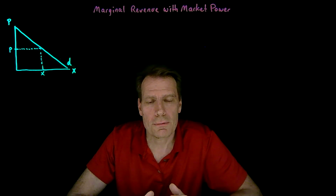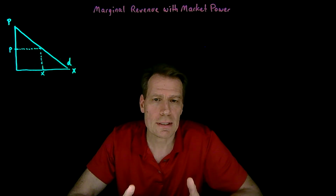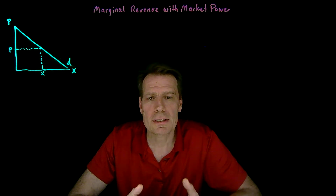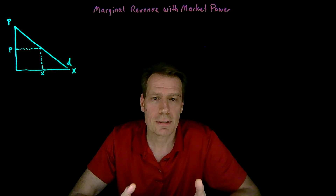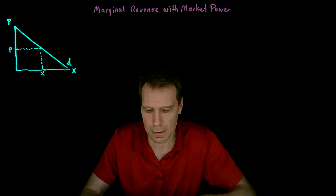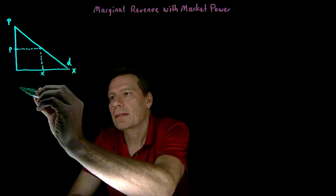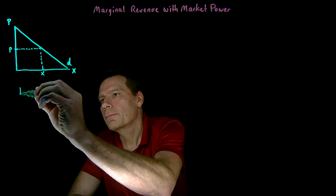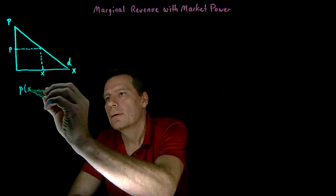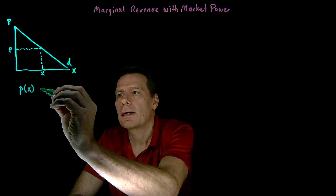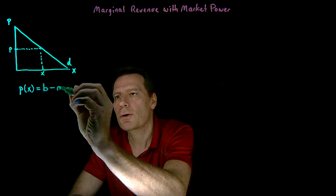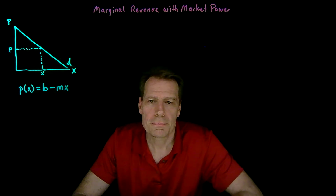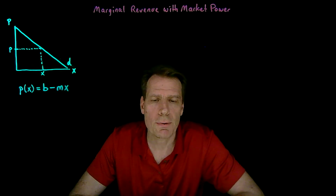Now if that demand curve is linear — if it takes the shape of a straight line — we can come up with a simple mathematical expression for it. It's just the expression for a line. So the price given how much the firm produces is going to be equal to some vertical intercept minus the slope times x: P = b - mx, the simple equation of a line.